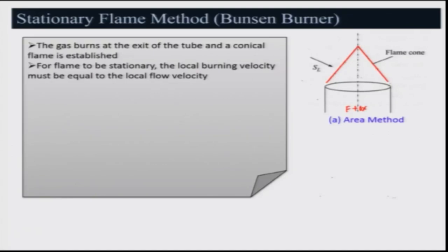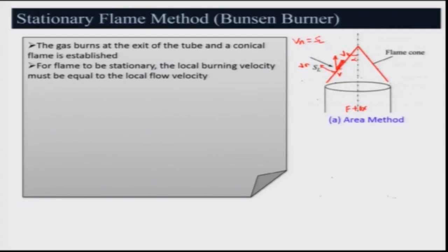Keep in mind that the local burning velocity must equal the local flow velocity. For example, if I take the fluid velocity V here and resolve it at angle alpha — into the normal direction V_N and the tangential direction V_T along the flame surface — then the flame can be stabilized only when V_N equals SL locally. However, in the area method we will be using an area-average approach.